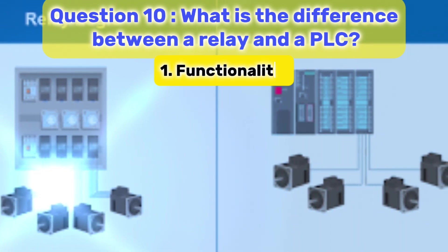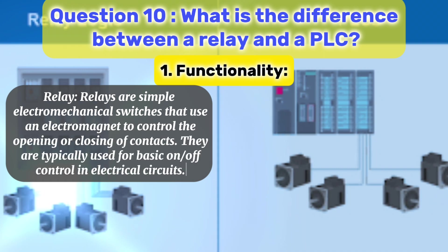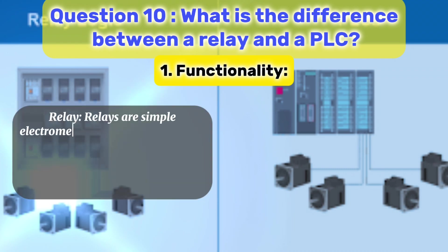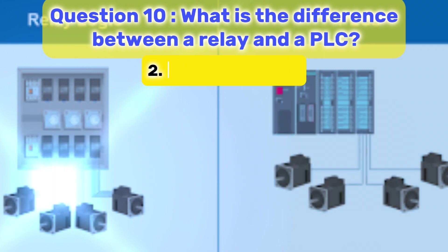1. Functionality. Relay: Relays are simple electromechanical switches that use an electromagnet to control the opening or closing of contacts. They are typically used for basic on-off control in electrical circuits. PLC: PLCs are advanced digital devices designed for automation and control of complex processes. They can perform tasks beyond simple switching, such as logic operations, data processing, and sequential control.